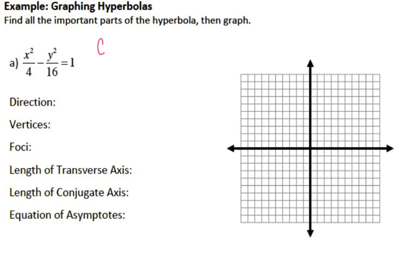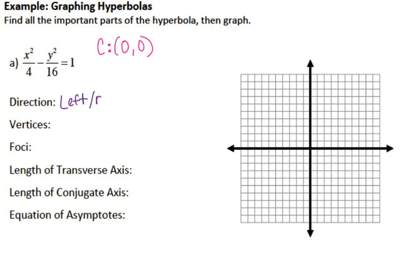One thing you should find first is the center. Your center is going to help you create the graph similar to how you would do an ellipse. My center for this one is at (0, 0) because it's your H and your K — whatever you're adding or subtracting from the X and the Y, which in this case is nothing. In order to figure out the direction, you're looking for which variable comes first. In this case, my X is first, so my hyperbolas are going to open to the left and to the right, meaning they open horizontally.